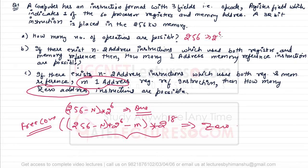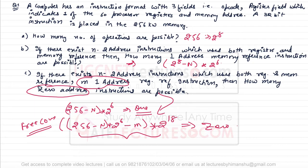To summarize: the answer to part one is 256 (2^8); the answer to part two is (2^8 − n) × 2^6; and the answer to part three is ((256 − n) × 2^6 − m) × 2^18. That concludes this problem. The next architecture to look at is the register-to-register reference architecture.